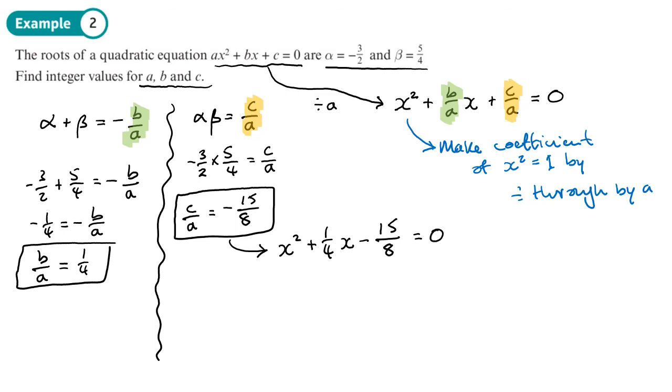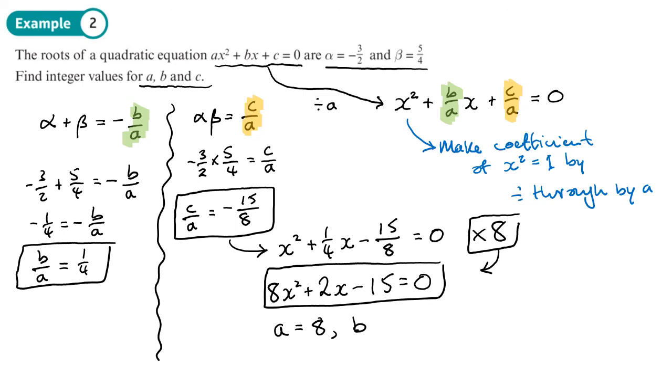It says that the coefficients need to be integers, whole numbers. So I'm going to multiply everything through by 8. That will turn everything into a whole number. That will give me 8x squared. 8 times a quarter is 2, so 2x. And 15 over 8 times by 8 is 15. There we go, I have found that quadratic. So a is 8, b is 2, c is negative 15.